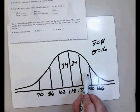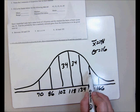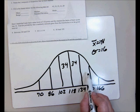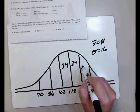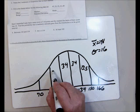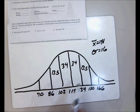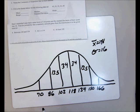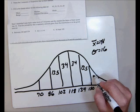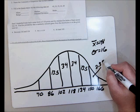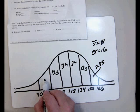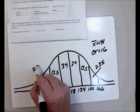There's 95% of the data within two standard deviations. So this piece is 13.5 and this piece is 13.5. Within three standard deviations is 99.7%. So this piece is 2.35% and this piece is 2.35%.